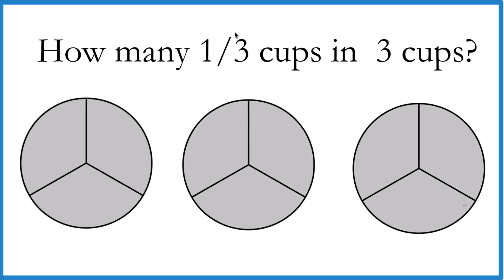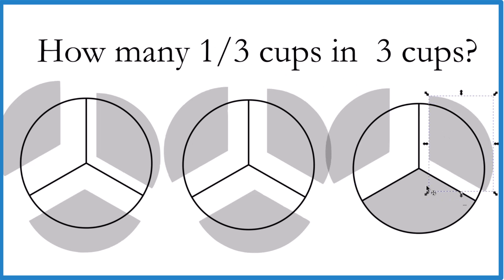So in answer to our question, each one of these is one-third, there are nine of these in three cups. So nine one-third cup measures in three cups.